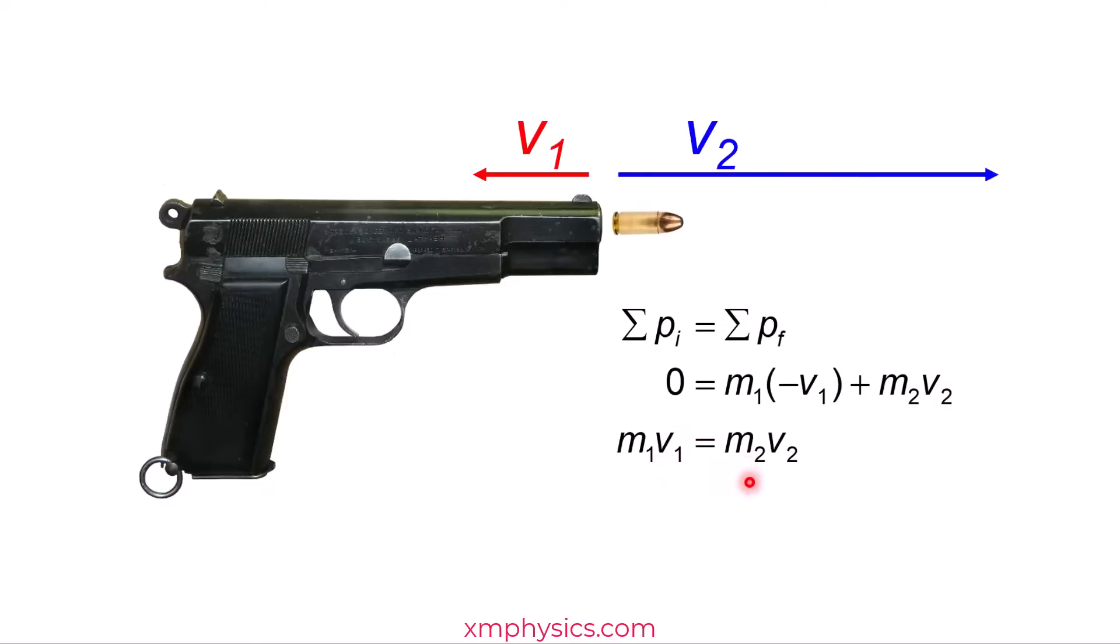So rearrange the thing so we got M1V1 is M2V2. Rearrange again, so V1, which is the recoil speed of the gun, is M2 over M1 times V2. V2 is the speed of the bullet. Usually M2 over M1 is a small fraction because you expect the gun to be maybe at least 30, 40 times the mass of the bullet. But then the bullet speed is supersonic, so even a small fraction of it is quite a large recoil speed.